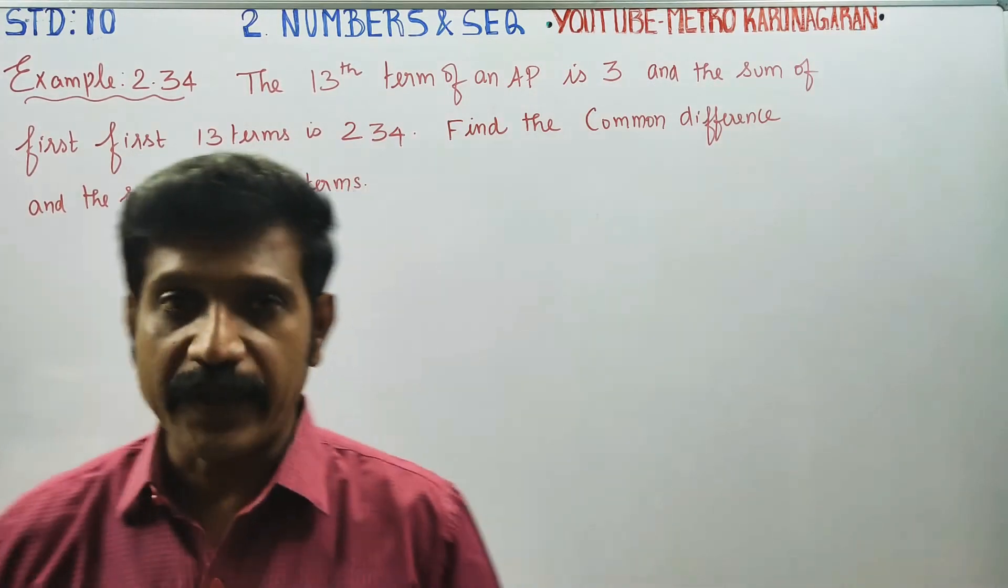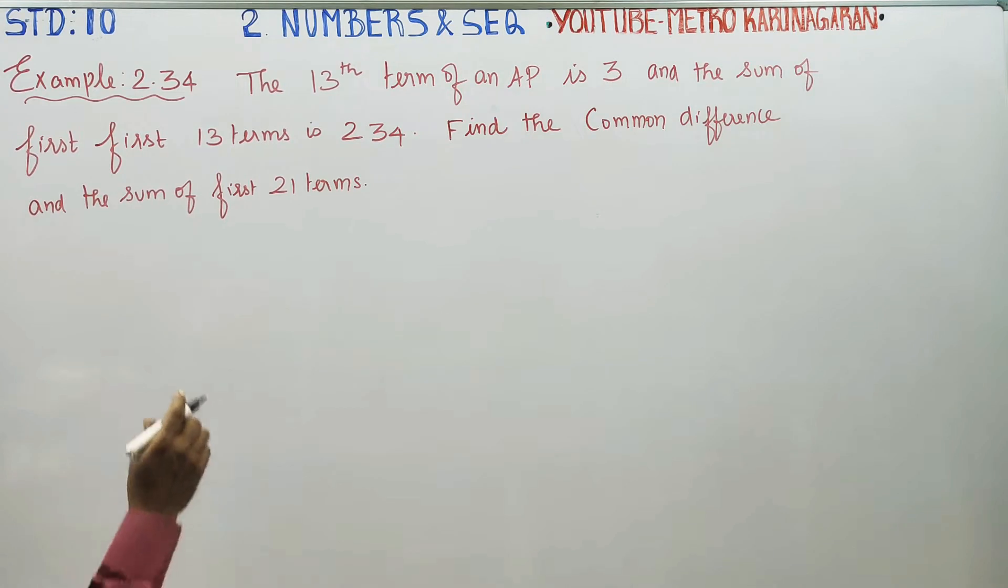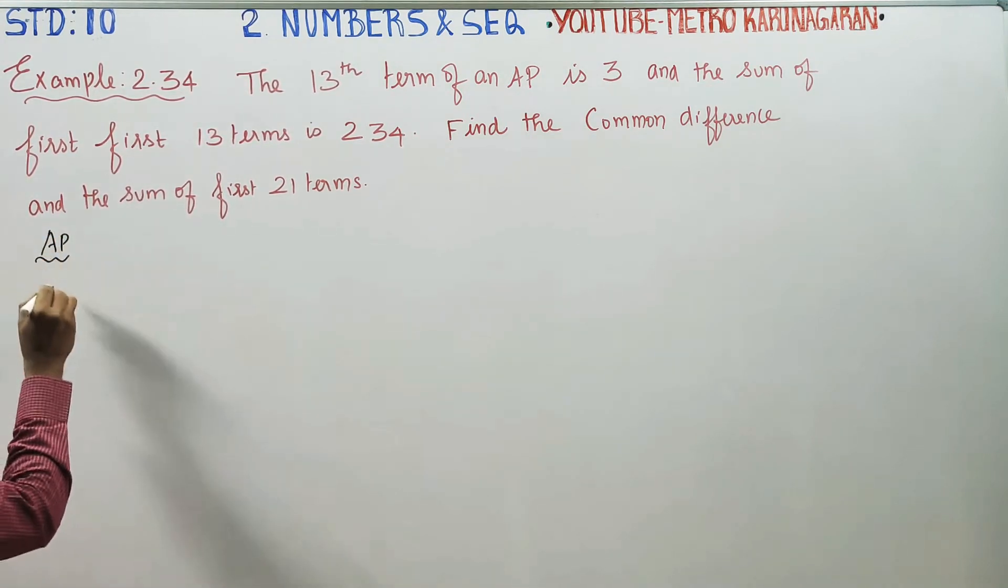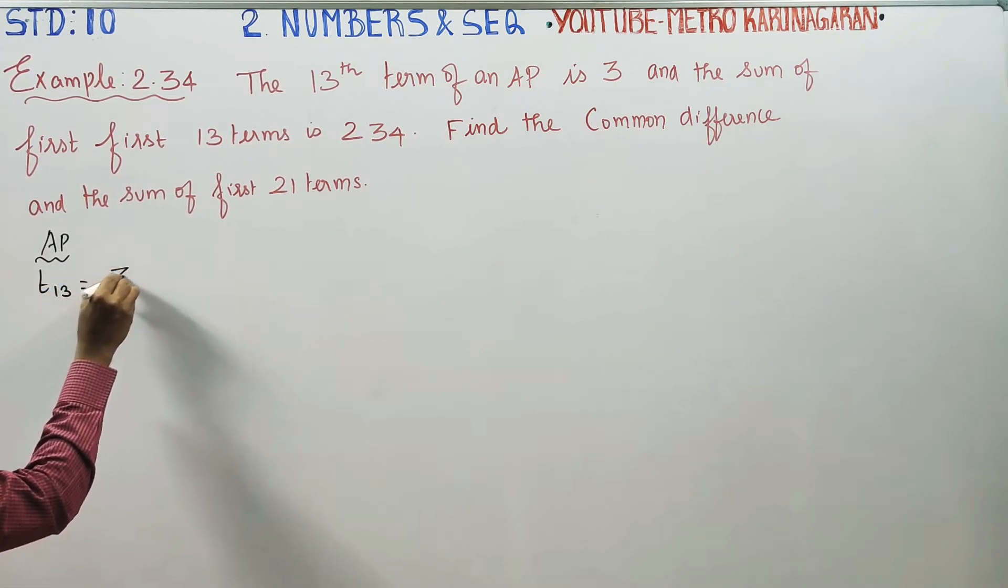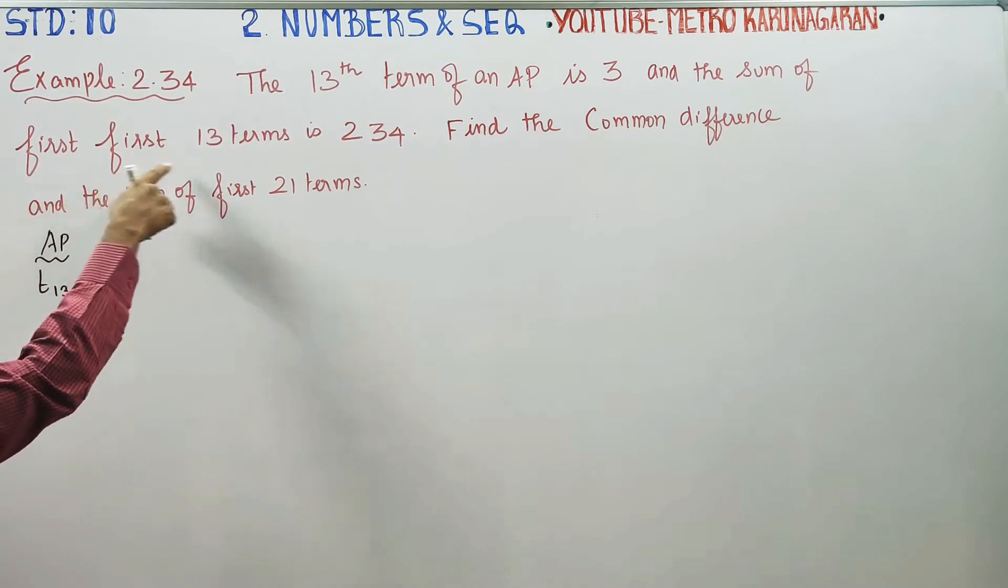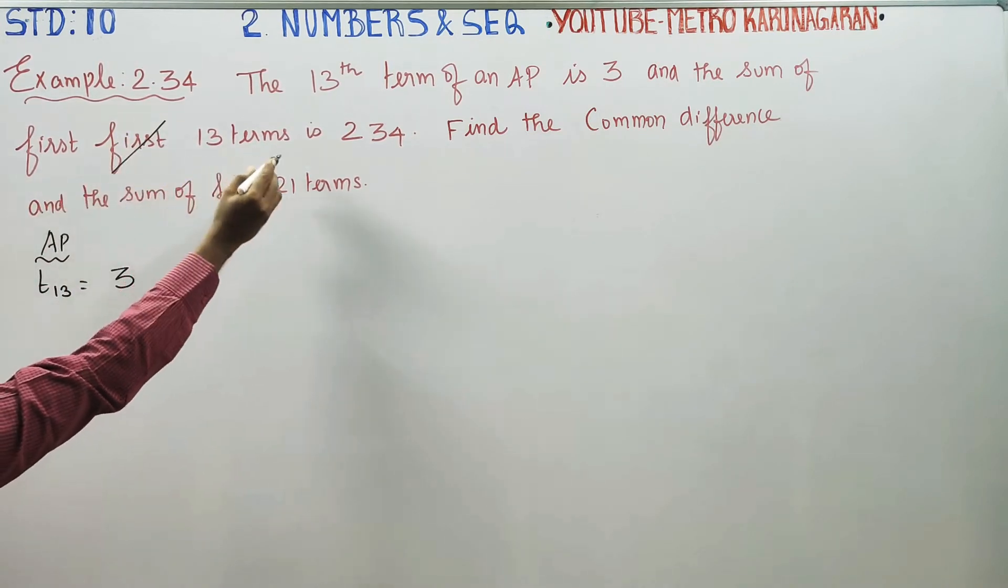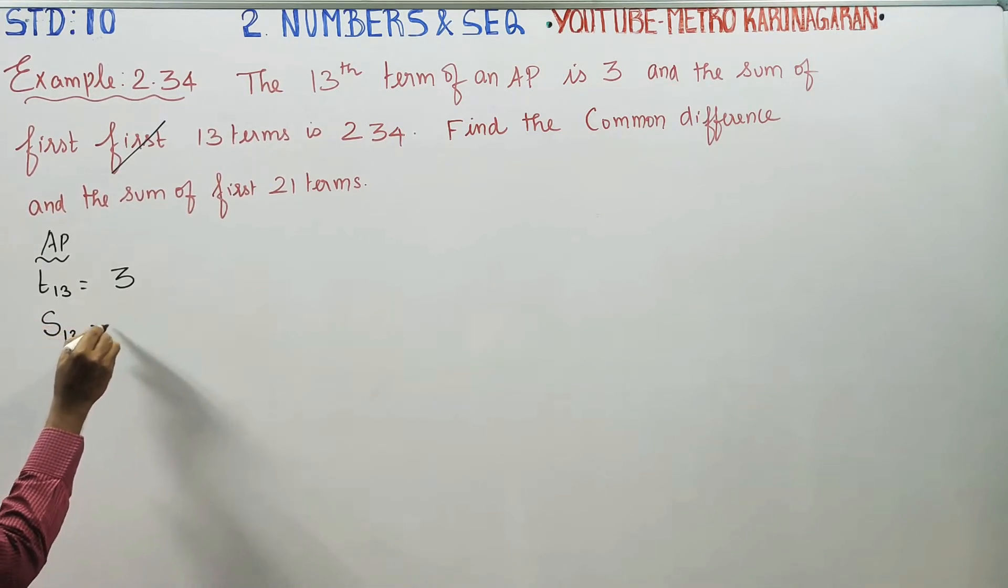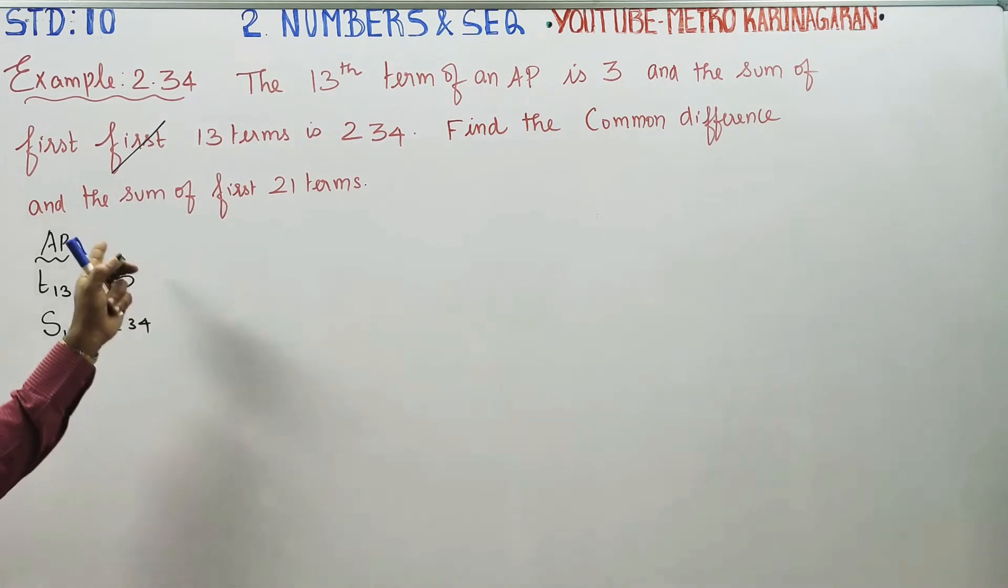The 13th term of an AP is 3, and the sum of first 13 terms is 234.